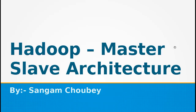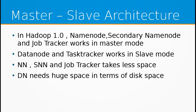Hello and welcome to my YouTube channel. Today we will learn about master-slave architecture in Hadoop. Suppose we have a Hadoop cluster of 1000 nodes — out of which three nodes would predominantly be operating in a master mode: the NameNode, the Secondary NameNode, and the JobTracker. The remaining 997 machines are going to be working in the slave mode.